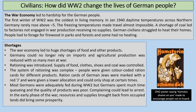The focus on the war economy led to a decrease in consumer goods and hardship for German people. The first winter of World War II was the coldest in living memory. In January 1940, daytime temperatures across northern Germany rarely rose above minus 5 degrees. The freezing temperatures made travel almost impossible. A shortage of coal meant factories not engaged in war production received no supplies. German civilians struggled to heat their homes and had to forage for firewood in parks and forests. The shortages were because the focus of the economy was on fighting the war, leaving a shortage of food and other products.